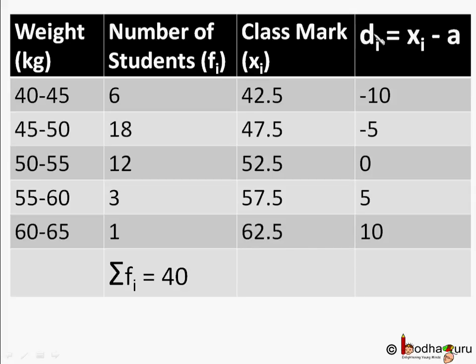So we denote it by di. So for the first row d1 equal to 42.5 minus 52.5 which is equal to minus 10. D2 equal to 47.5 minus 52.5 which is equal to minus 5 and so on.